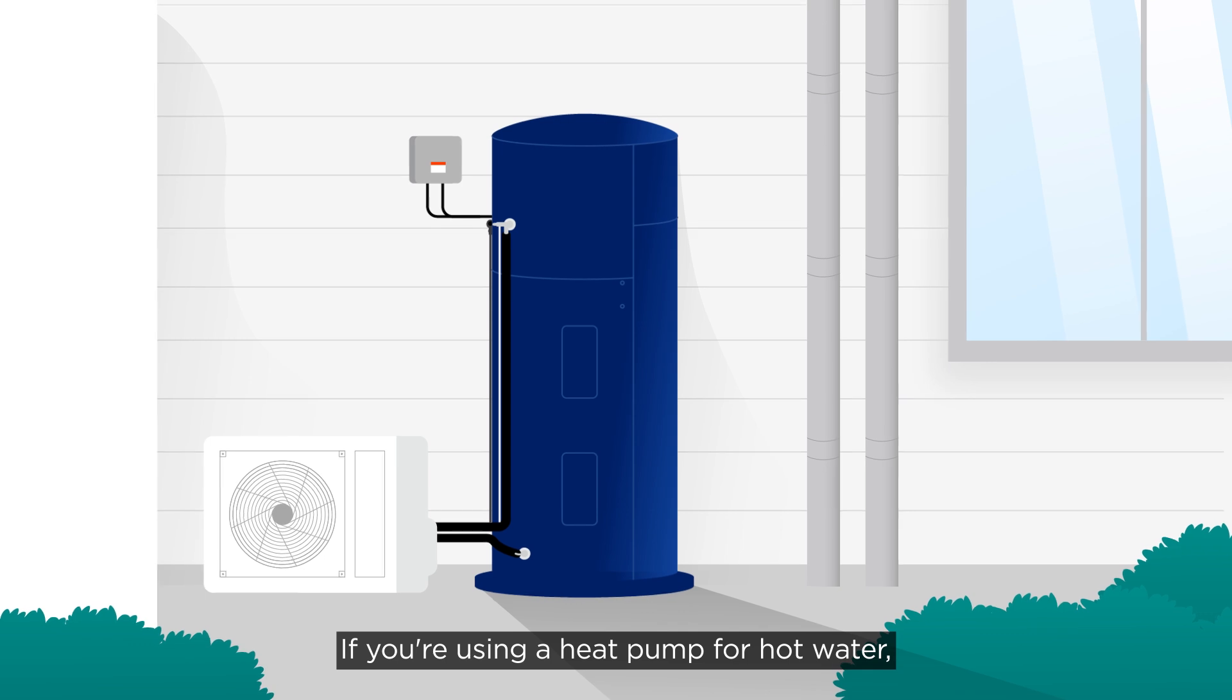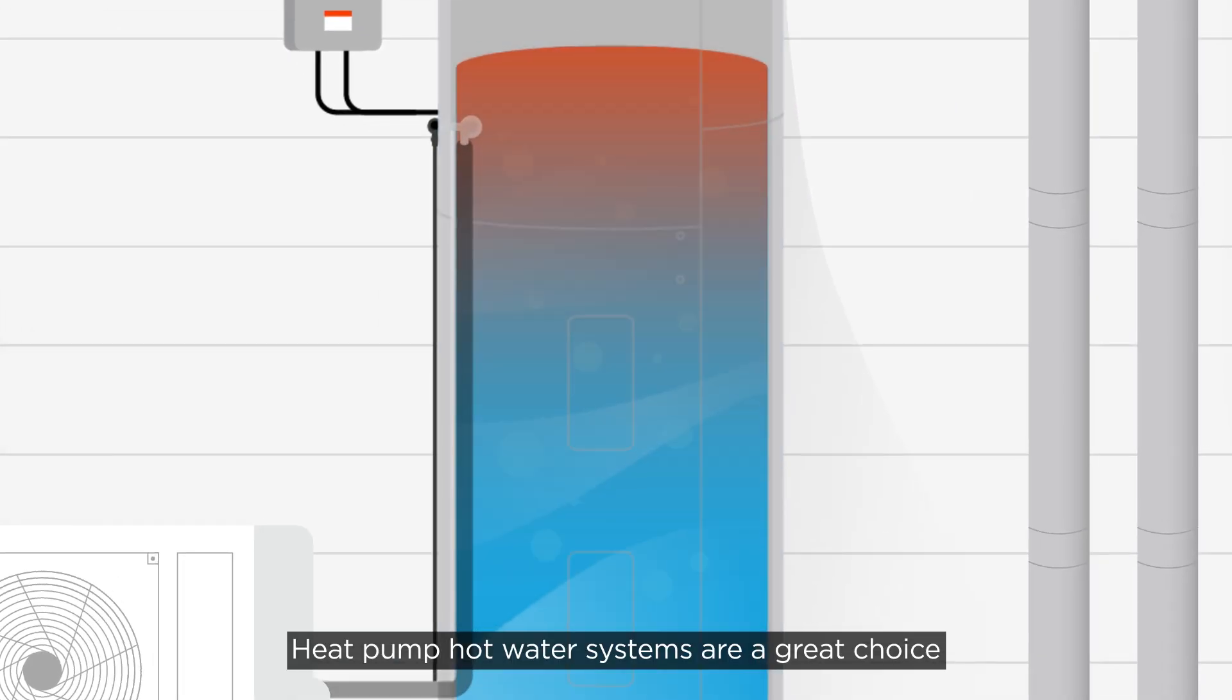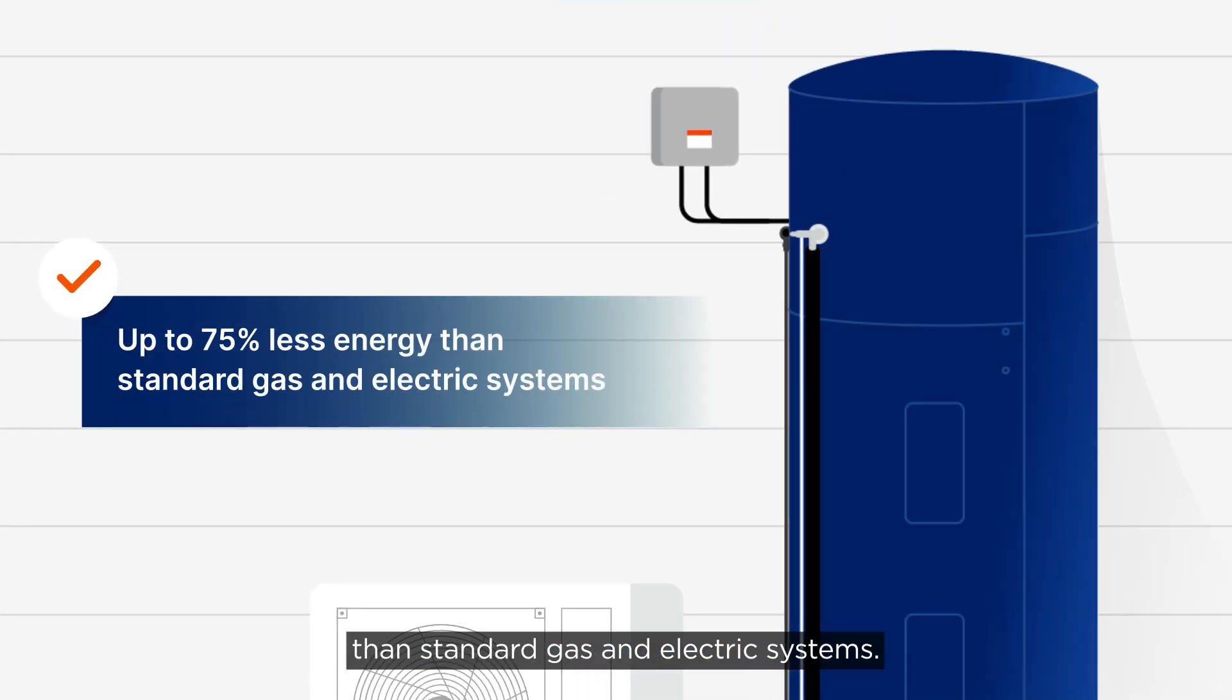If you're using a heat pump for hot water, it's the same process. Heat pump hot water systems are a great choice because they can use up to 75% less energy than standard gas and electric systems.